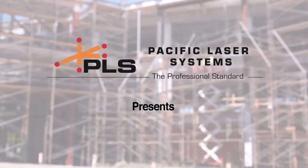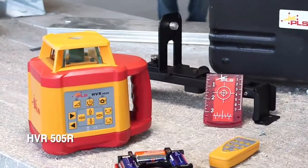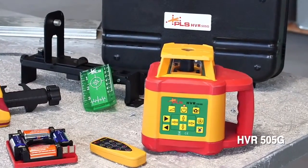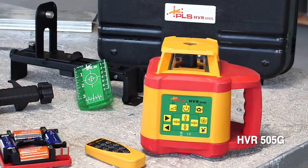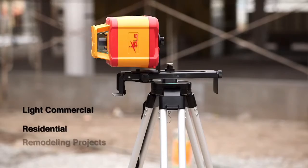PLS Pacific Laser Systems presents the HVR 505R and HVR 505 Green Rotary Lasers. The HVR 505 is a compact mid-range rotary laser designed for light commercial, residential, and remodeling projects.